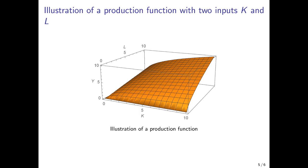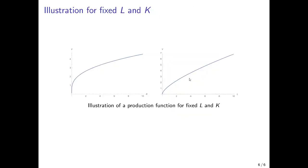If we hold one production factor constant and increase only the other, we take a cross-section of the production function. For example, holding labor constant and only changing capital gives a cut of this production function along one line, illustrated on the next slide. Similarly, holding capital fixed and changing labor gives a cut along another line, yielding a two-dimensional projection of the three-dimensional production function.